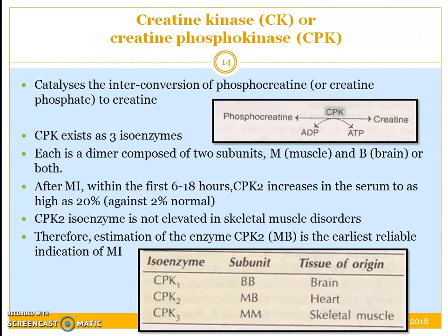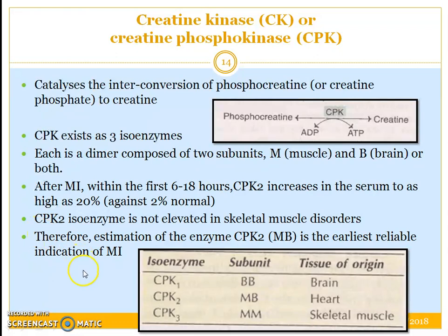Creatine kinase, or creatine phosphokinase, is responsible for catalyzing the interconversion of phosphocreatine to creatine, utilizing the conversion of ATP to ADP. CPK exists as 3 isoenzymes, each a dimer composed of 2 subunits — M for muscle and B for brain. After myocardial infarction, the first enzyme released into circulation within the first 6–18 hours is CPK2, which increases to as high as 20% compared to the normal 2%. CPK2 is not elevated in skeletal muscle disorders, making it a characteristic diagnostic feature for myocardial infarction.